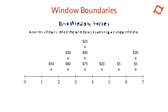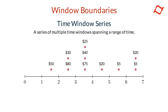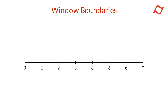The next type of window boundary is a time window series, which consists of multiple time windows spanning a range of time relative to the query timestamp. Instead of a single window, this series breaks the range into smaller windows, allowing you to retrieve aggregated values across each for more granular analysis. This is useful for computing aggregations like weekly averages over the course of a month. Let's take the example of a query made on day six.